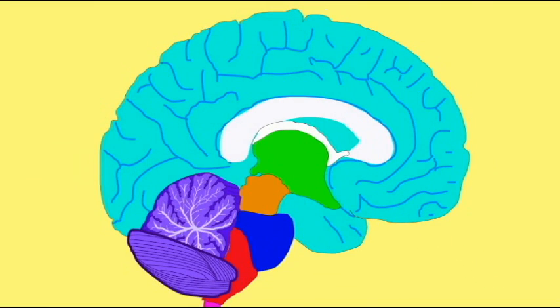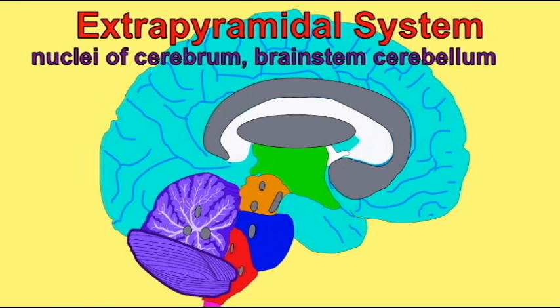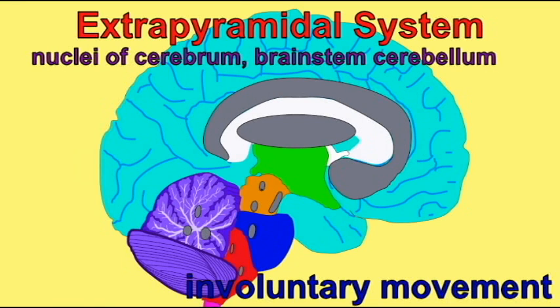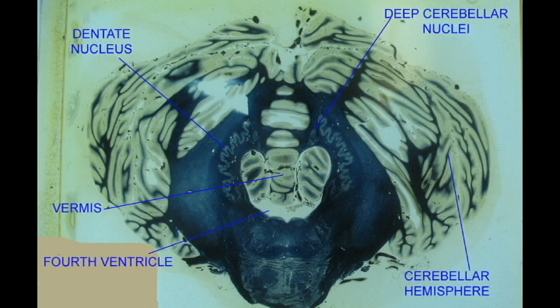The control centers here are not the motor cortex, but rather nuclei deep inside the cerebrum, such as the basal nuclei, the thalamus, nuclei of the brain stem, and the cerebellum.